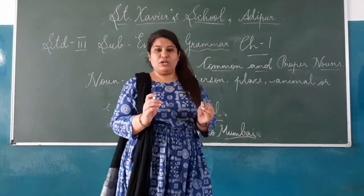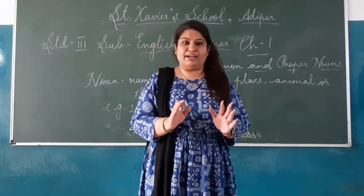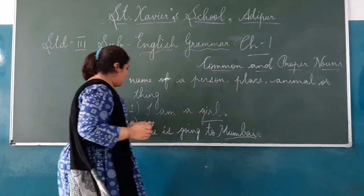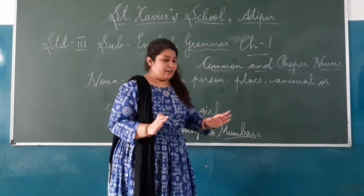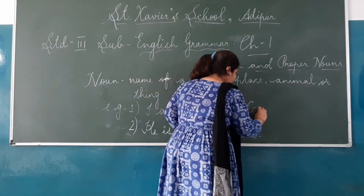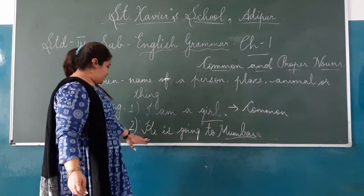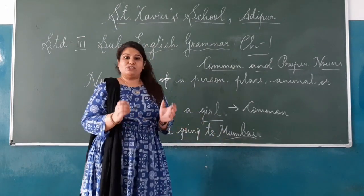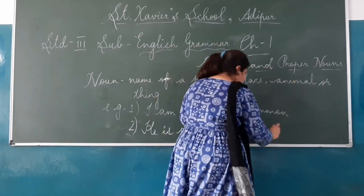Today children, I will just explain the minor details. In the next class we will learn more. Now — 'I am a girl.' Girl is a commonly known word, it is not a specific name. So girl is a common noun. In the next example, 'He is going to Mumbai' — Mumbai is a noun, and Mumbai is a proper noun because it is the specific name of a place.